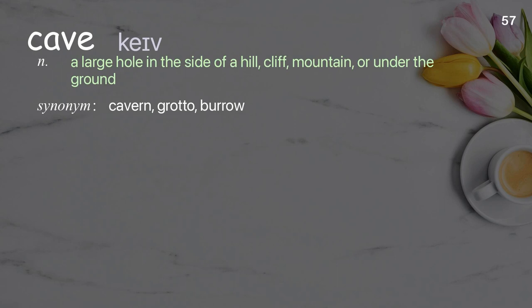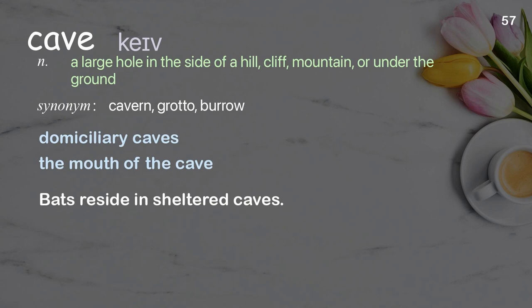Cave: a large hole in the side of a hill, cliff, mountain, or under the ground. Examples: domiciliary caves, the mouth of the cave. Bats reside in sheltered caves.